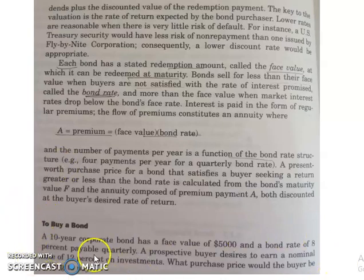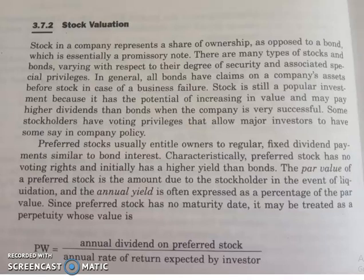There is a question on screen — please pause the video, solve the problem, and if you have any doubt we will discuss it in the Slack session. Moving on to stock valuation: the difference between a stock and a bond is that a stock gives you ownership — some percentage of ownership in the company — whereas a bond is simply lending money; you get it back with interest but have no ownership.